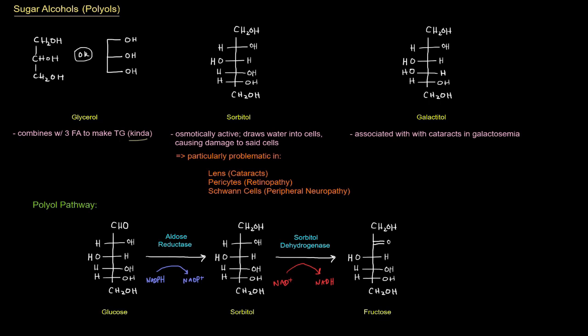Sorbitol. So sorbitol, right here, is very similar in structure to glucose. In fact, the only difference is right here. It's got an alcohol instead of an aldehyde. We've got glucose down here. Most oxidized carbon is this aldehyde right here. The difference between glucose and sorbitol is right there.